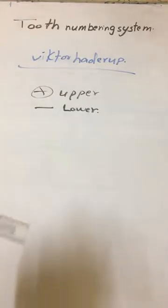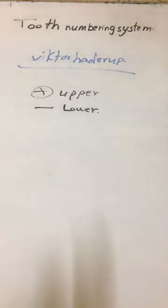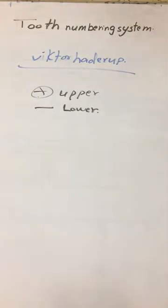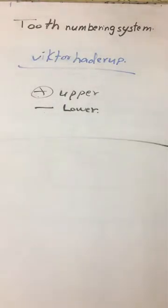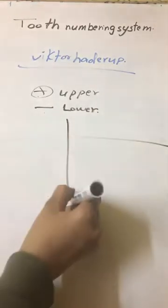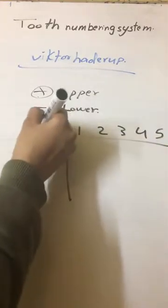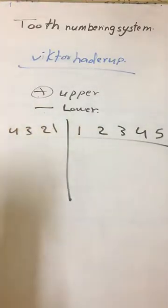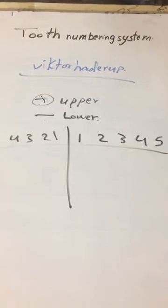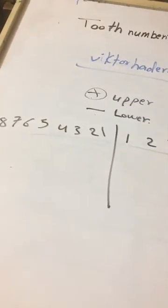And the number, if you put the number right or left to the plus or minus, it indicates right or left. For example, for the permanent teeth, from one till eight, one till eight. If you put it in one side.